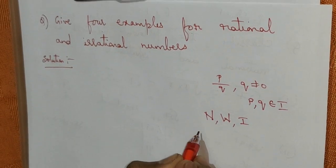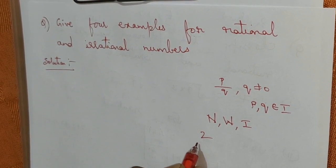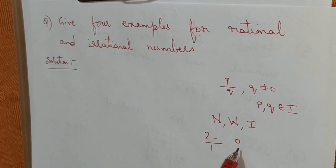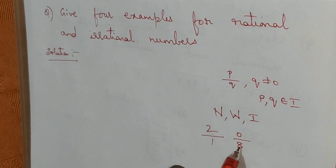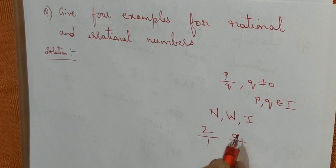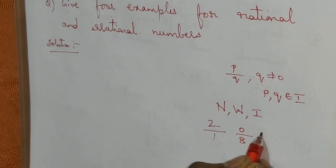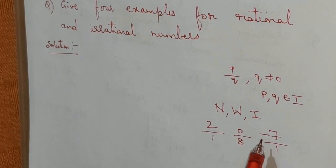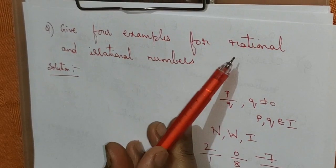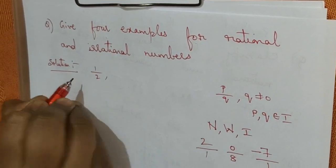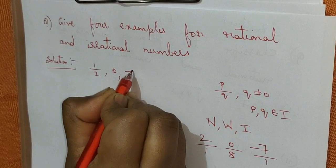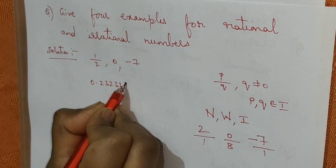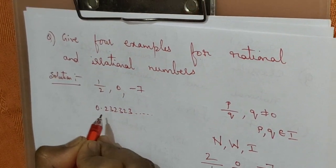For example, if I write 2, it can be written as 2 by 1, so it is a rational number. I can write 0 as well, because 0 can be written as 0 by any number, so 0 is also a rational number. I can write any integer — for example, minus 7, which can be written as minus 7 by 1. So I can write 1 by 2, or 0, or minus 7, or even 0.232323 and so on.